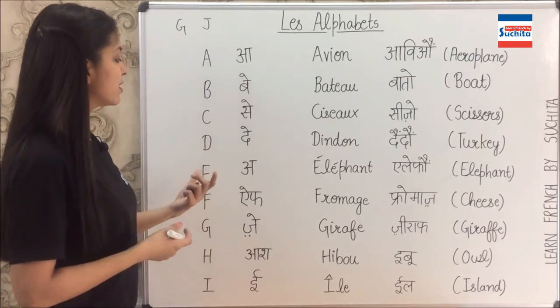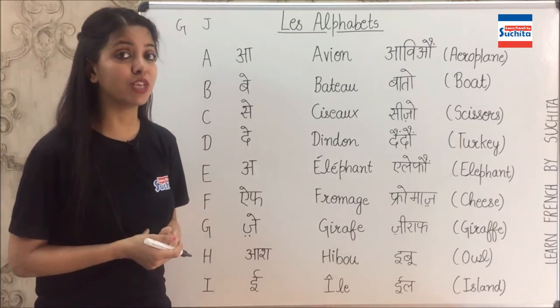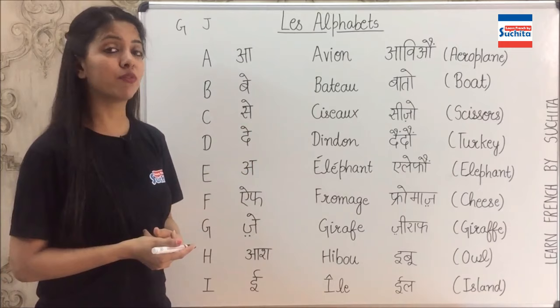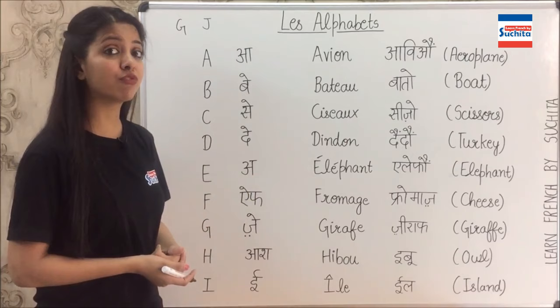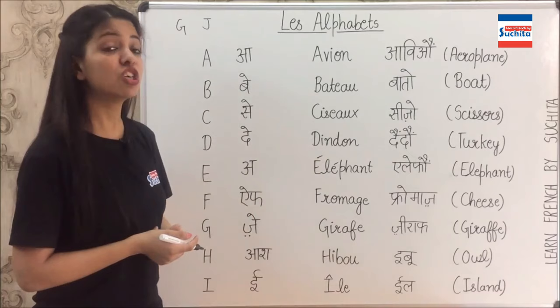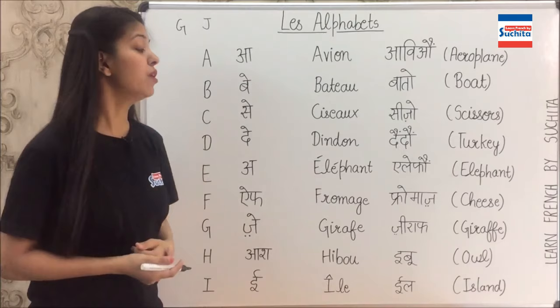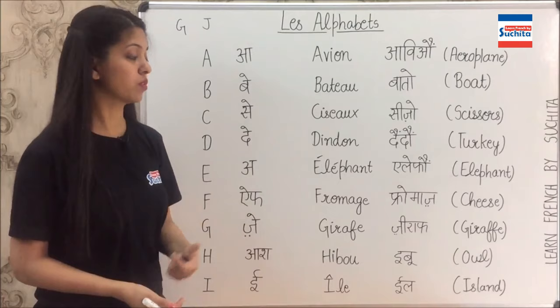The next is E — not E but É. Éléphant, the pronunciation is éléphant. Repeat after me: éléphant. The next is F — fromage. The pronunciation is fromage, which means cheese. Remember, France is very, very famous for its cheese and its wines — so fromage means cheese. The next is G (pronounced J in French) — girafe. The pronunciation is girafe, and the meaning is giraffe. The next is H — hibou. Remember, now in French we write H but we do not pronounce it. So it is not hibou — it is hibou, which means an owl.